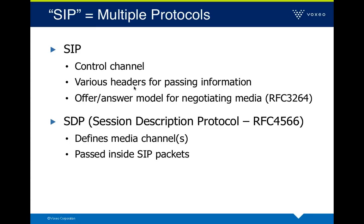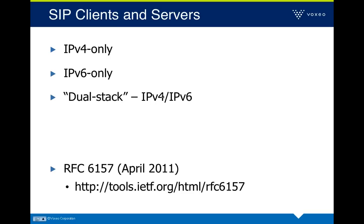SIP clients and servers need to be thought of in three categories: IPv4 only (what we've been dealing with), IPv6 only (straightforward if everyone were IPv6), and dual-stack IPv4 and IPv6 — which is what we'll see for the foreseeable future. Most devices will be dual-stack. Interestingly, just last week on April 28th, RFC 6157 was released, covering the transition from IPv4 to IPv6 for SIP. It's a good one to look at.